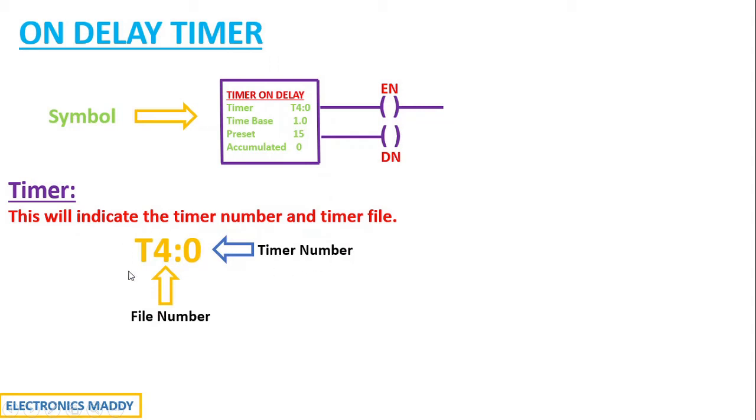Now the question is, why do we need them? If you carefully observe, in a PLC there will be multiple number of files that are there. For example, T5 can be used for Counter, T3 can be used for a different purpose and T4 is chosen to be used for Timer. When we are choosing 4, that means the PLC will understand that we are actually utilizing a Timer in that particular PLC.